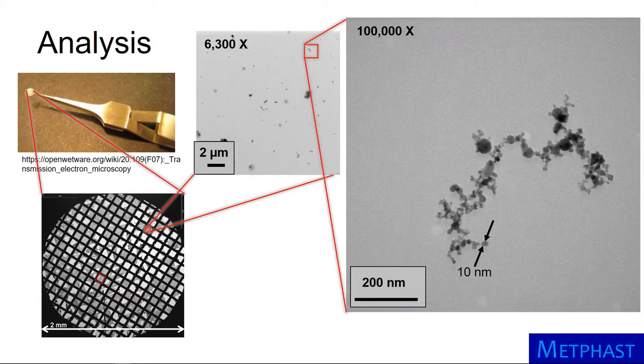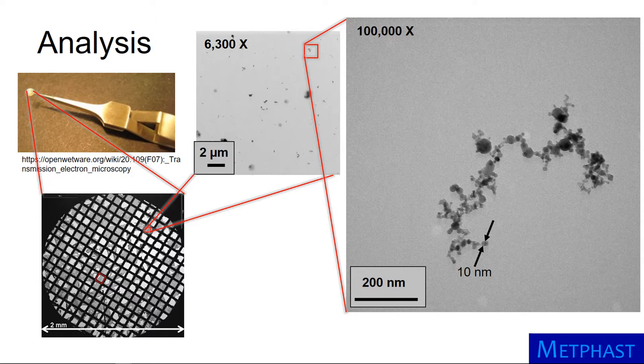Zooming in further, we can see that the particles are complex chain agglomerate structures with the smallest features on the order of 10 nanometers.